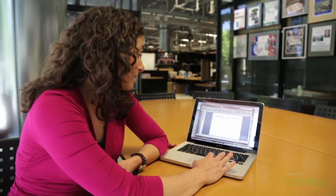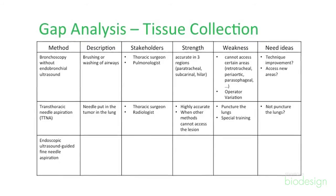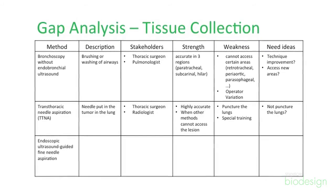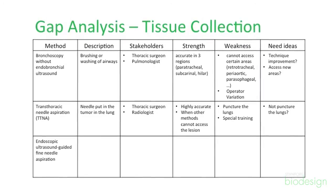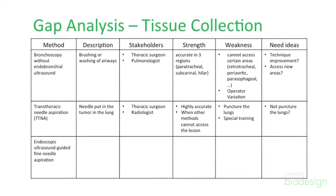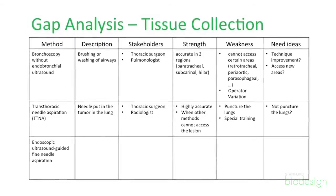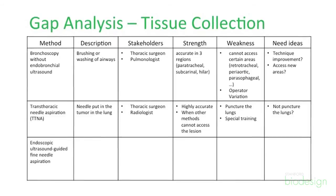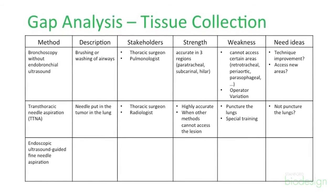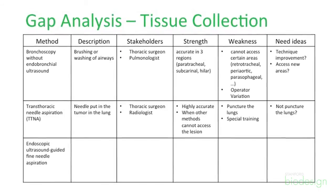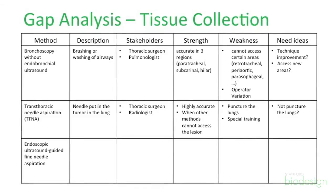For example, in my case I put bronchoscopy, thoracic needle aspiration, and endoscopic ultrasound-guided fine needle aspiration as three options. I describe each, who does it, and a couple of strengths. And it made me think — for some of these, it turns out they puncture people's lungs. Maybe there's an opportunity to find a new product that doesn't puncture patients' lungs in order to get their tissue — something to take note of when thinking about refining my need.